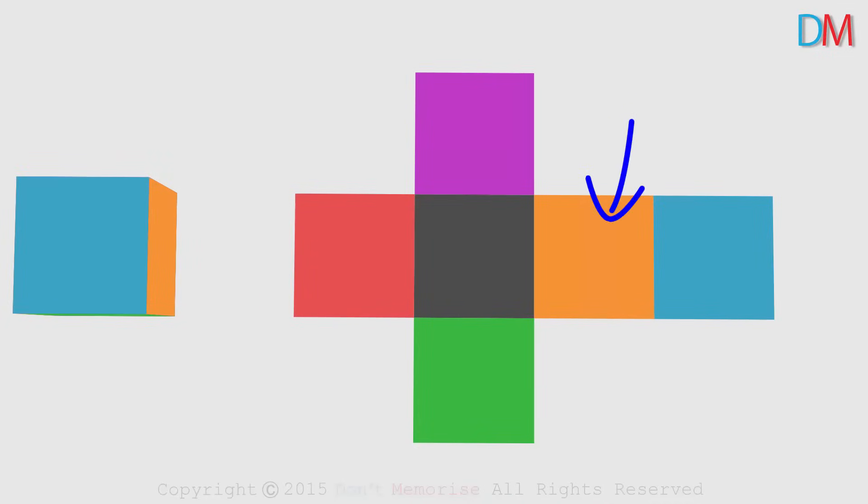The orange face is the face to the right. The blue face is the top face. The green face is the face in the front. The black face is the base. The purple one was the one at the back. And the red one was on the left.